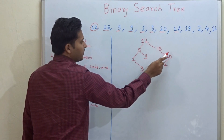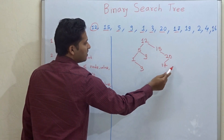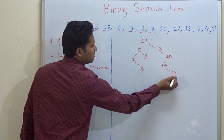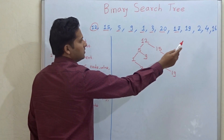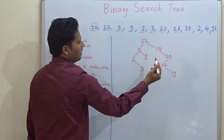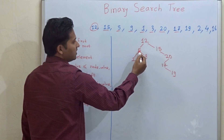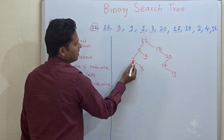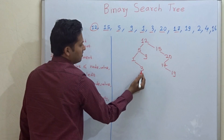Then 19: 19 is greater than 15, less than 20, and greater than 17, so 19 is placed as the right child of 17. Then 2: 2 is less than 12, less than 5, and greater than 1 but less than 3, so it comes to the left of 3.